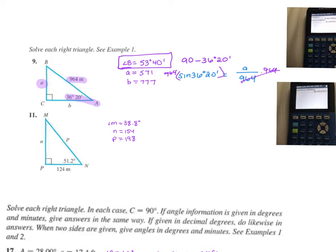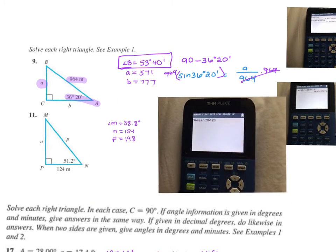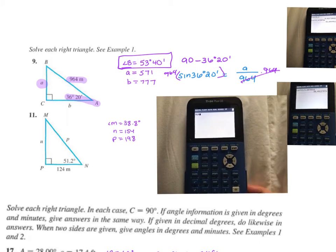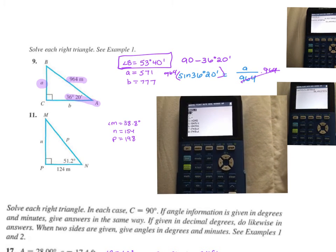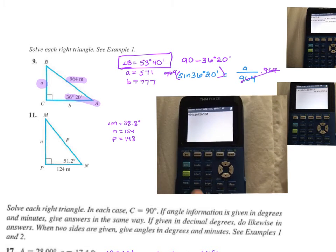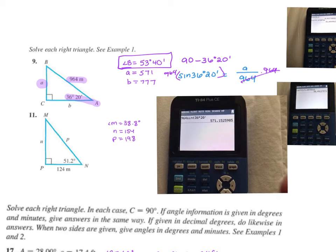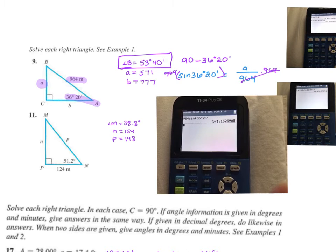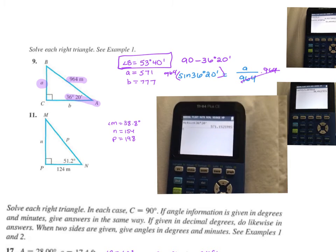Let's type this in the calculator. I would get 964 times the sine of 36. Go to second apps, back to the degree. And then, 20 minutes, second apps, single tick mark, hit enter, and I get that 571. This one is just rounded to the whole number. But if you had kept decimal points, obviously, it would be 571.2 or 571.15, depending on how you rounded that.